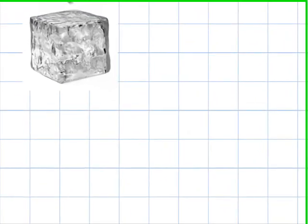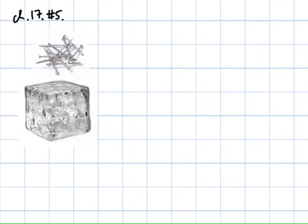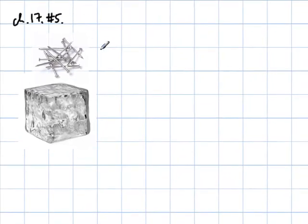Number five, a 50 gram chunk of 80 degrees Celsius iron is dropped into a cavity in a very large block of ice at zero degrees Celsius, so we have 50 gram chunk, approximately two ounces. 50 grams of 80 degrees Celsius nails, or iron actually, is dropped into a cavity in a very large block of ice at zero degrees Celsius. How many grams of ice will melt?